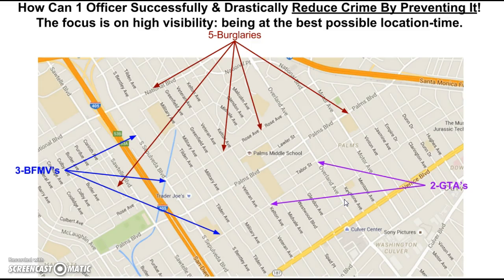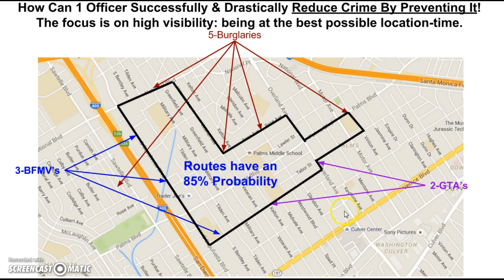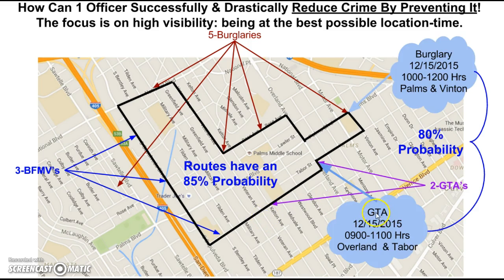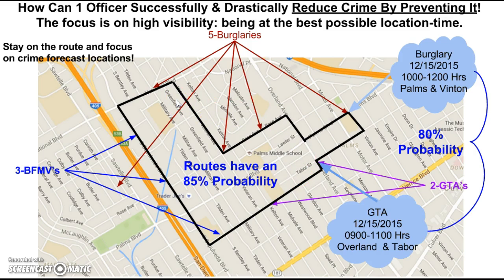The answer is: you focus on high visibility and being at the best possible location at the best time. Here we have the same problem area with the same crimes. What I'm going to provide you with is the route, which has an 85 percent probability that suspects are traveling before, during, or after the commission of a crime. I will also provide a specific crime forecast — the date, time, and location — with an 80 percent probability. So I'm helping you put your resources in the best possible location at the best time. By staying focused on the route and crime forecast locations, officers are going to prevent a lot of the crimes.